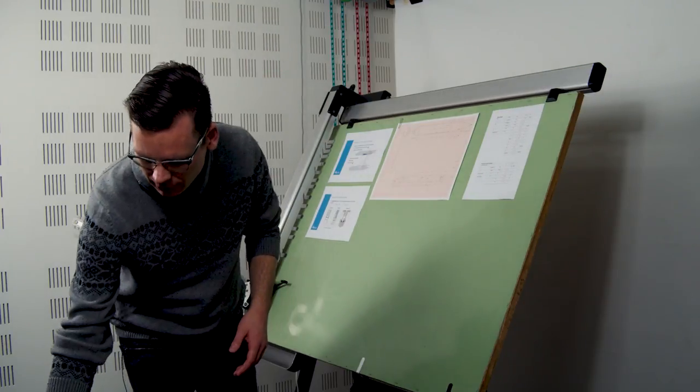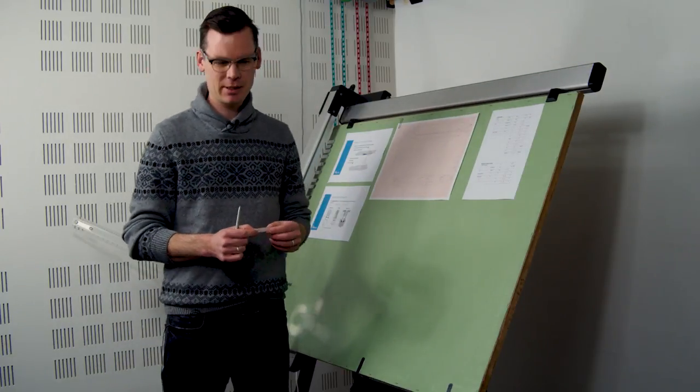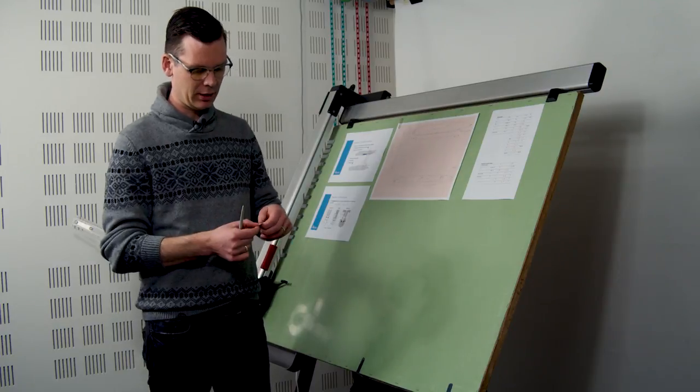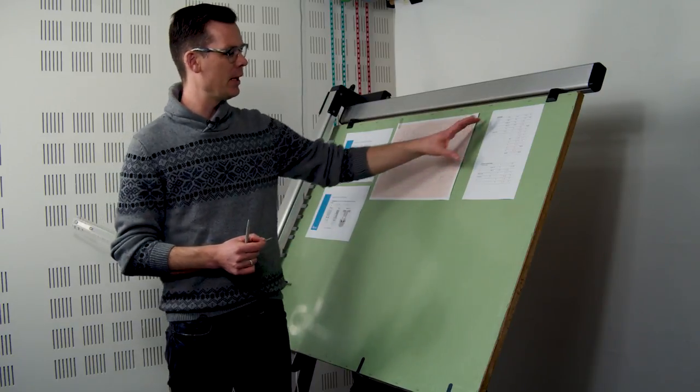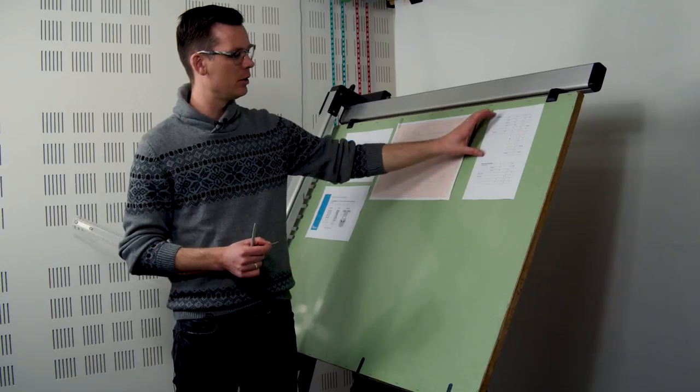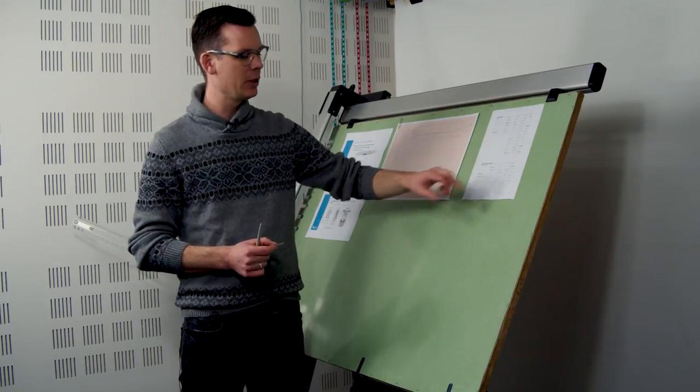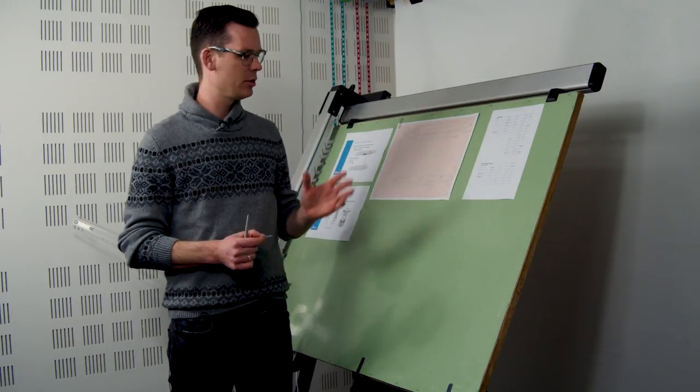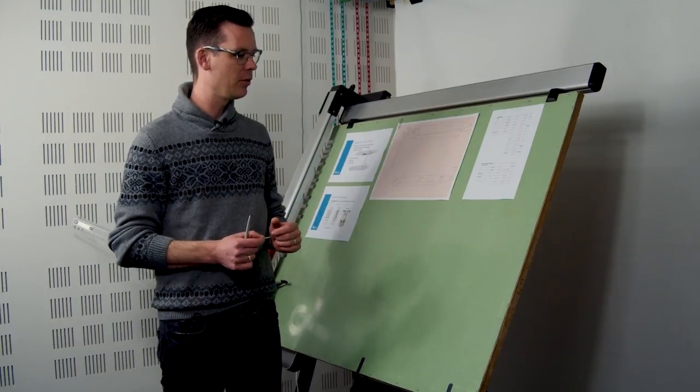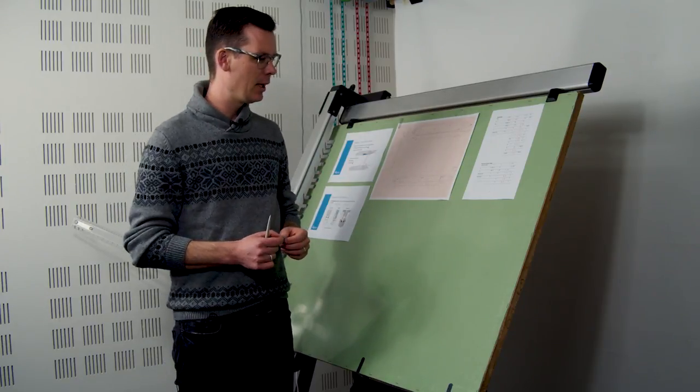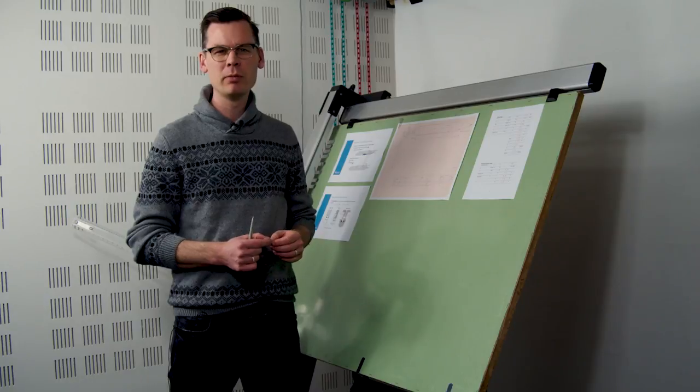So I already did some pre-calculations for the design of the engine, or at least the engine cowling, and based on the data sheet here I have already estimated that the engine is going to have a length of 4.8 meters and a maximum diameter of 1.1 meters.